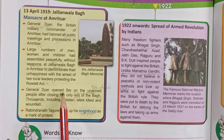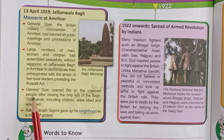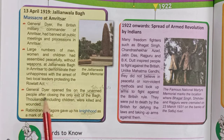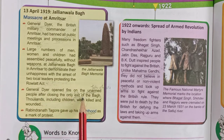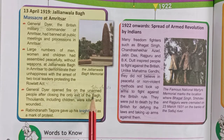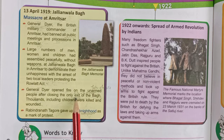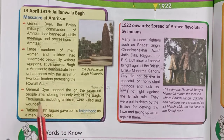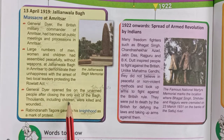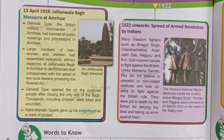Then General Dyer opened fire on the unarmed people. After closing the only exit of the Bagh, he ordered firing on the crowd. Thousands, including children, were killed and wounded.